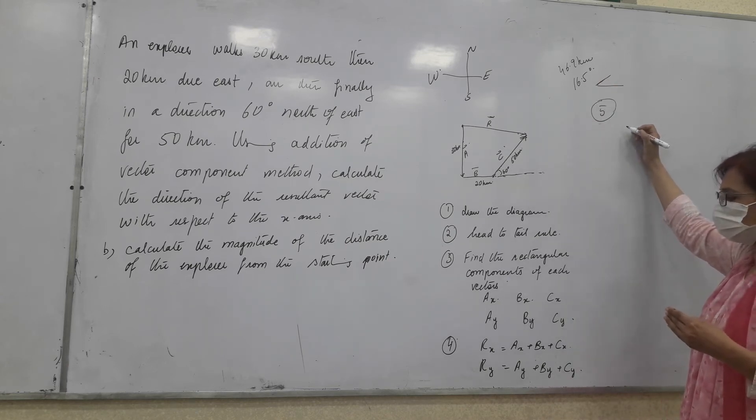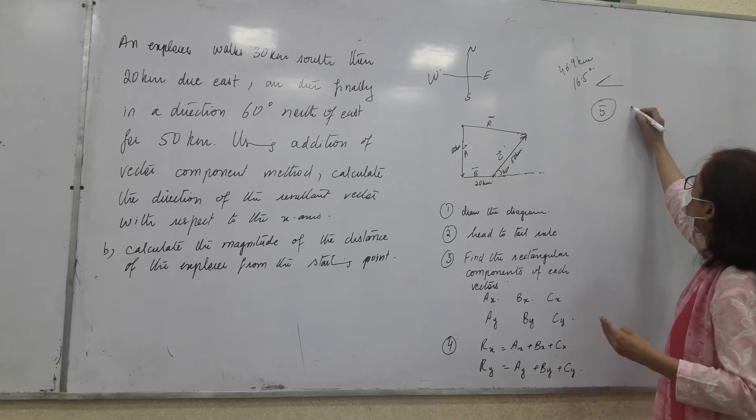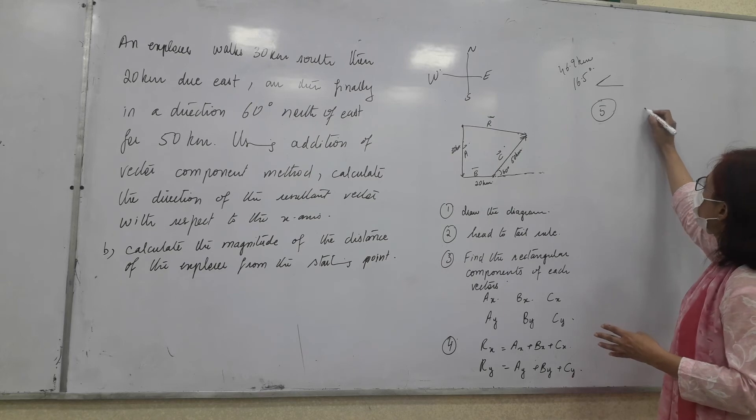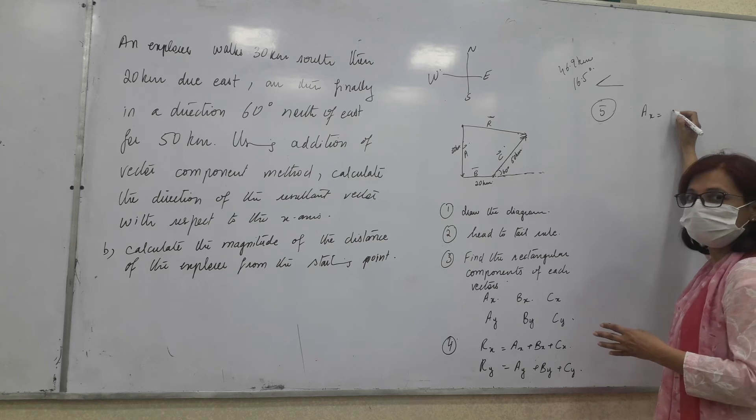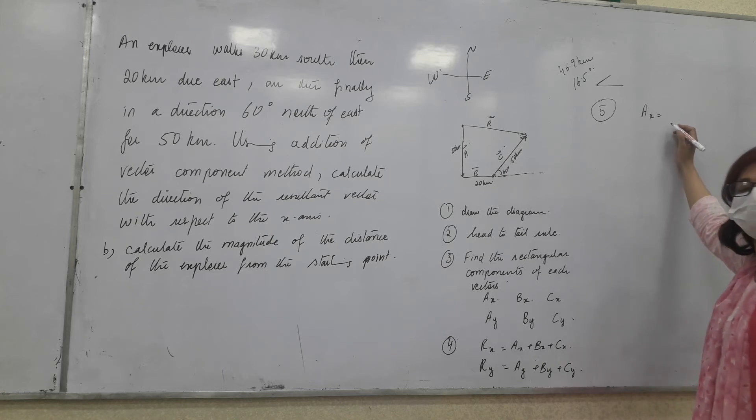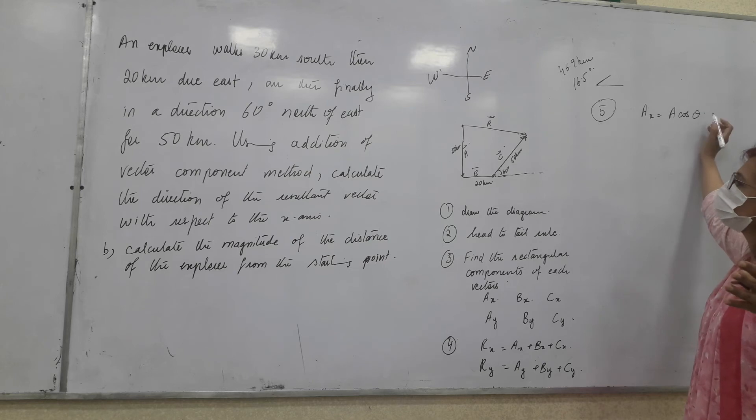So, the fifth step would be? What's the fifth step? Magnitude of the resultant vector. For the vector for example, Ax is equal to? Just the formulas. Cx. If A is there then Ax is A multiply by cos theta. Similarly, Ay is equal to A sin theta.